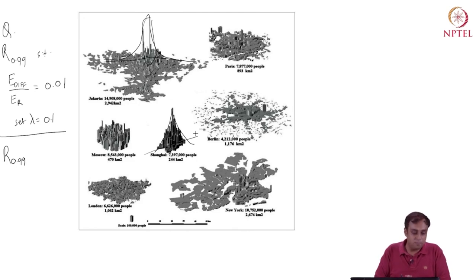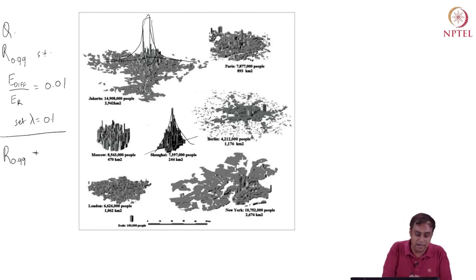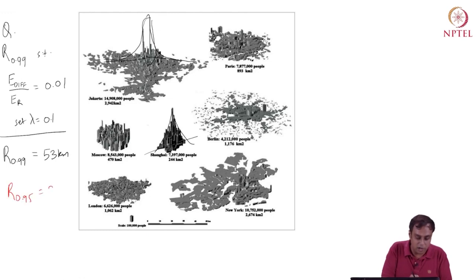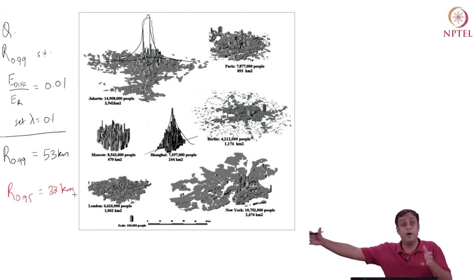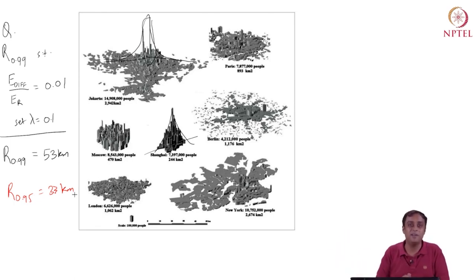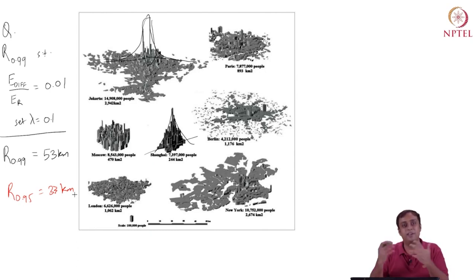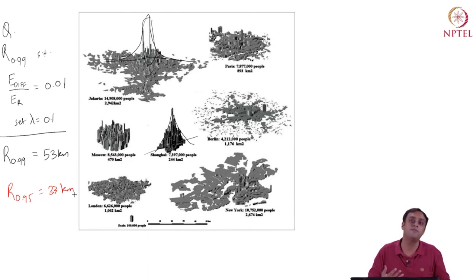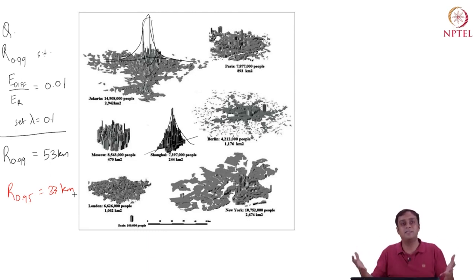Coming back to the question: R_0.99, capturing 99 percent of entropy, turns out to be 53 kilometers. So while R_0.95 was 33 kilometers, you need to go 20 kilometers further to go from 95 to 99 percent — a substantial amount of space. I hope you enjoyed this exposition of spatial entropy and its use in regional planning to understand and characterize cities. Thank you very much.